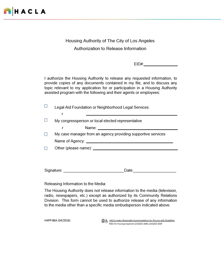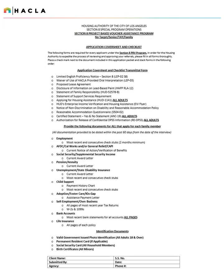The last page of the core application is the Housing Authority's authorization to release information. This form will allow the Housing Authority to release information to the folks listed on the form. The head of household will need to sign and date. This page of the application also includes the list of the forms included in the supplemental application and the list of required supporting documents needed to verify proof of income and assets.